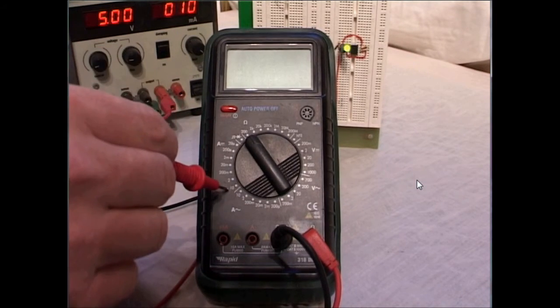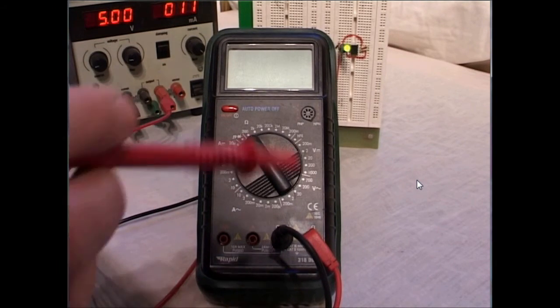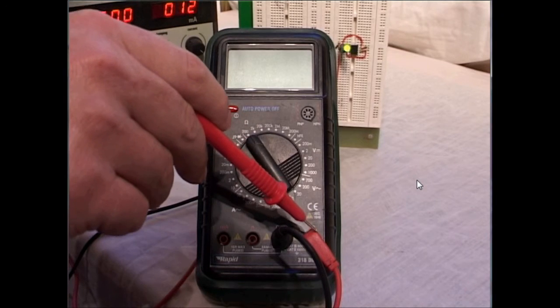In almost all cases, you will use the handheld multimeter to measure resistance and volts DC, occasionally volts AC.